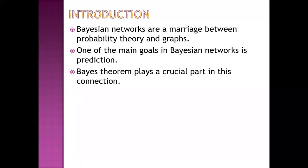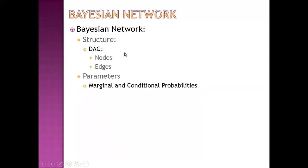Bayesian networks are a marriage between probability theory and graphs. One of the main goals in Bayesian network is prediction. Bayes' theorem plays a crucial part in this connection. A Bayesian network has structure and parameters. Structure is in the form of a directed acyclic graph which has nodes and edges, and parameters are nothing but marginal probabilities and conditional probabilities.